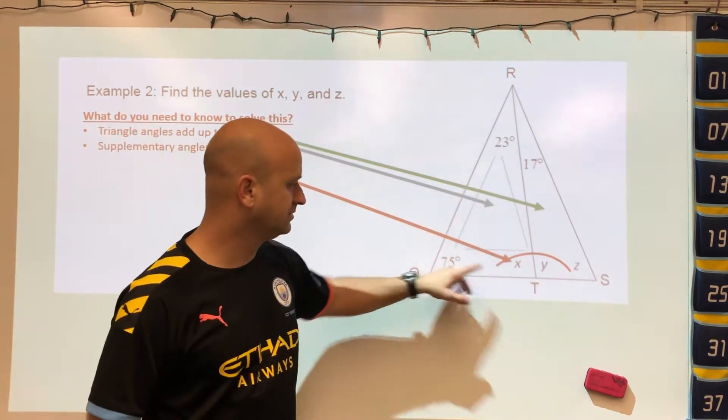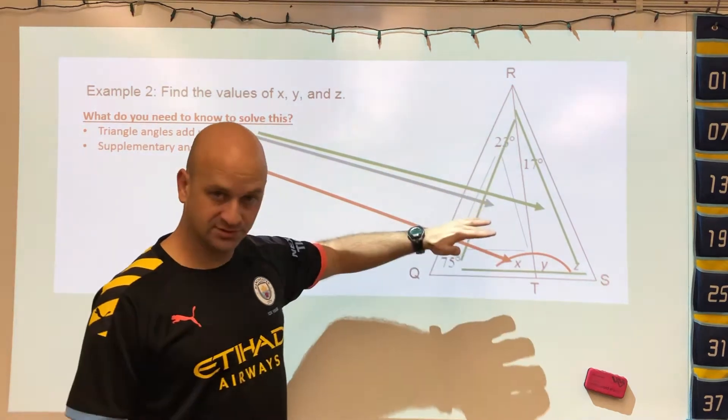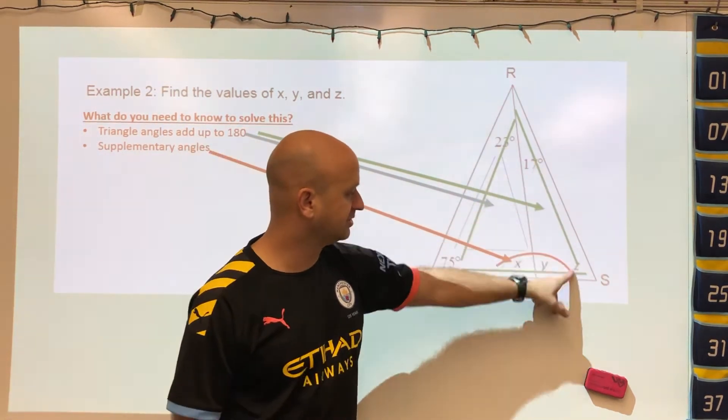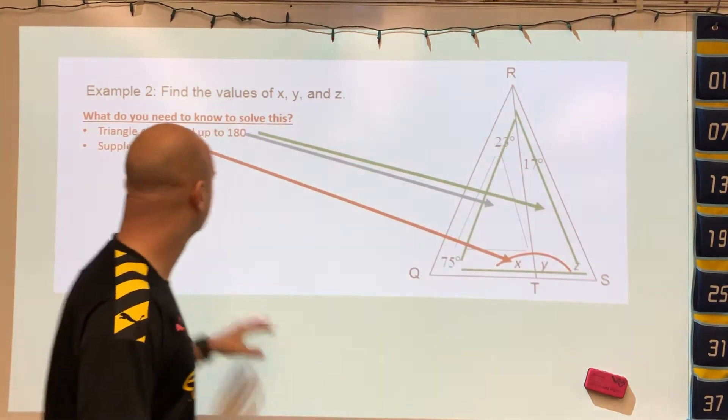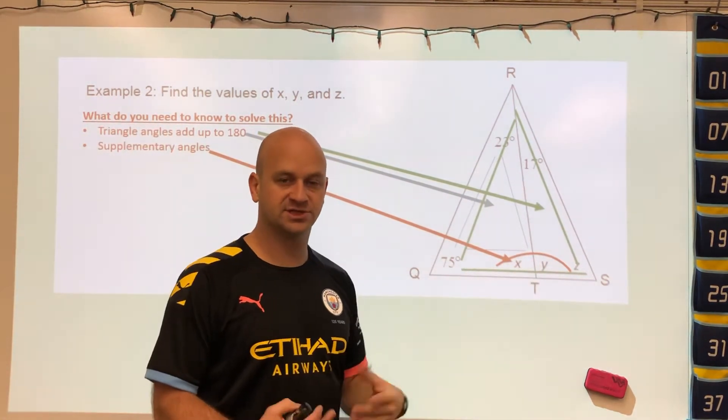In this small triangle all the angles will add up to 180, and in the big triangle they'll add up to 180. We're also going to look here and notice that we have supplementary angles that are linear pairs.